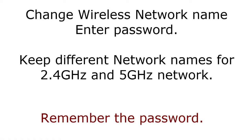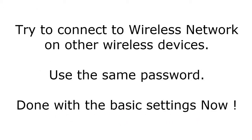Enter a password for both wireless networks to keep them secured. Remember that password, as it will be the wireless network key to connect to Wi-Fi. Save the settings. Then try to connect a wireless device such as a mobile phone to Wi-Fi — you will see the network listed, enter the password, click Connect, and you will be able to go online on your wireless devices.